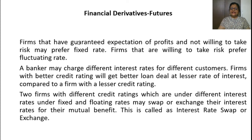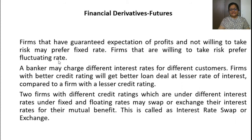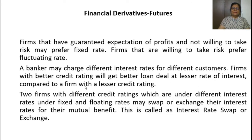Firms that have a guaranteed expectation for profit and are not willing to take a risk may prefer a fixed rate. Firms that are willing to take a risk prefer going for the fluctuation rate. A bank may charge different interest rates for different customers. Firms with a better credit rating will get a better loan deal at a lesser rate of interest compared to a firm with a lesser credit rating.